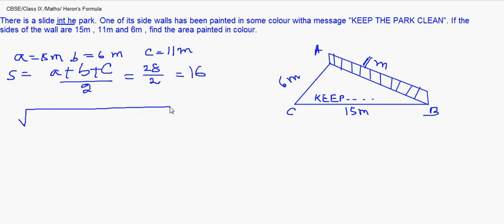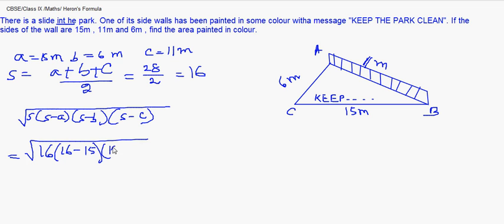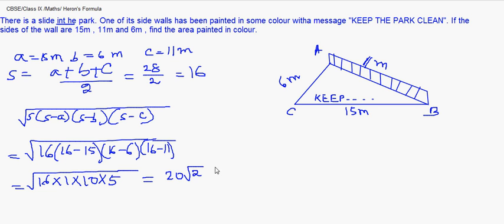We find using Heron's formula and substitute it. So it is √(16×1×10×5). And if we calculate this, I'm getting 20√2 meters square. So hope you followed.